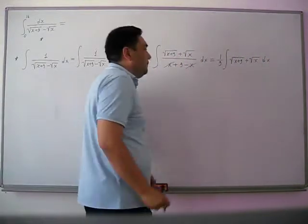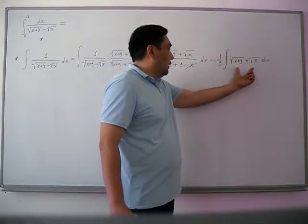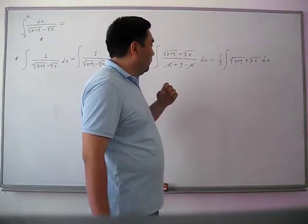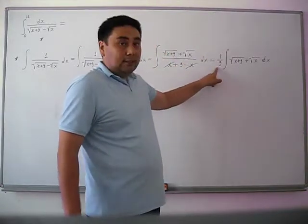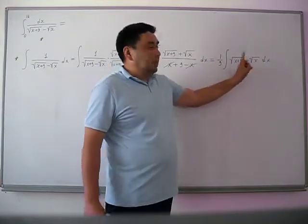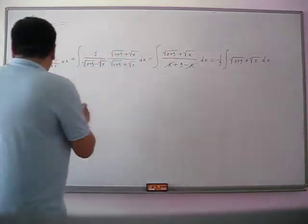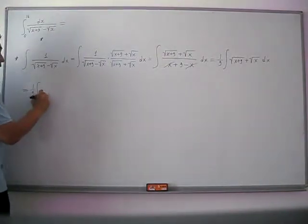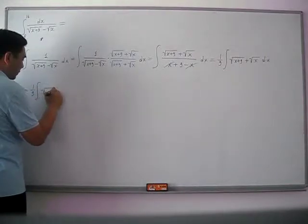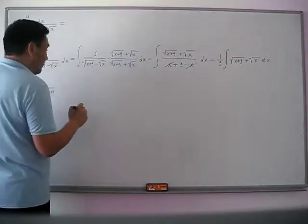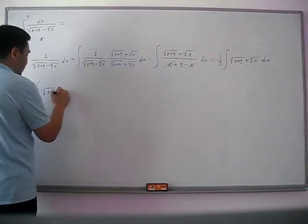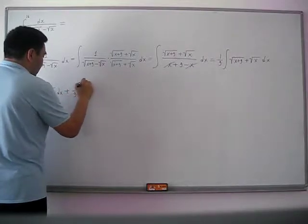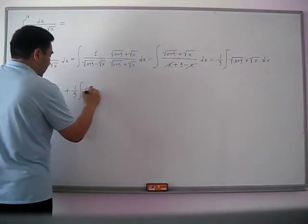Now we integrate these two terms, and we can integrate each term separately. The coefficient 1/9 belongs to each term. So our first integral is (1/9) integral of √(x+9) dx, and the second integral is plus (1/9) integral of √x dx.